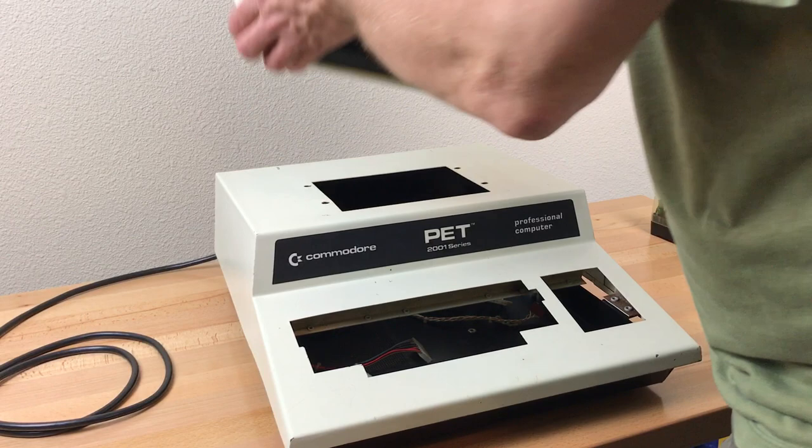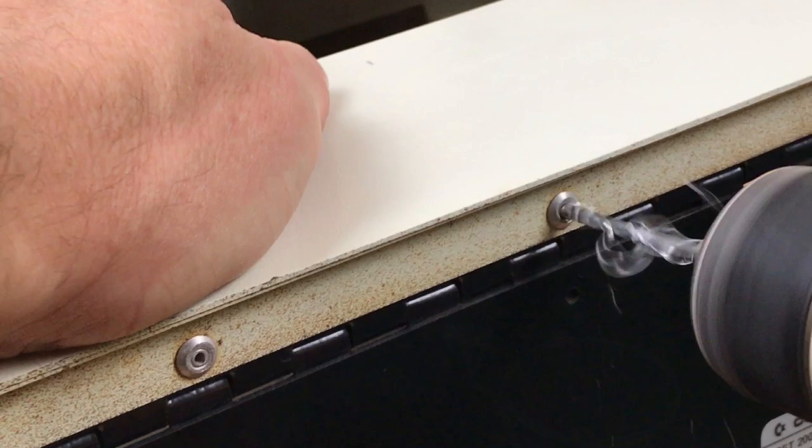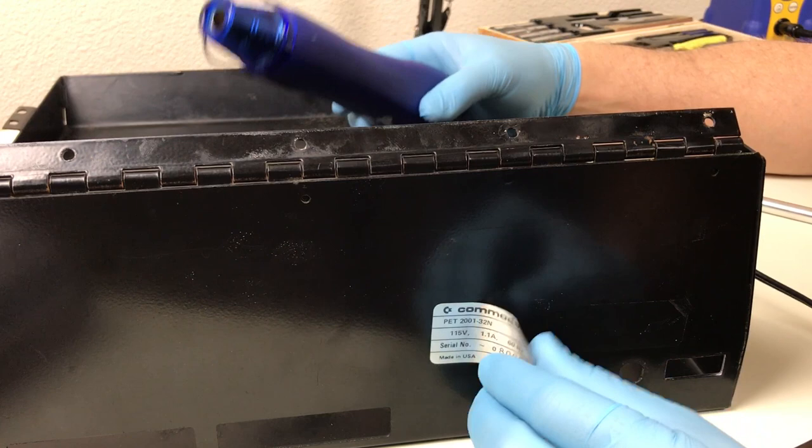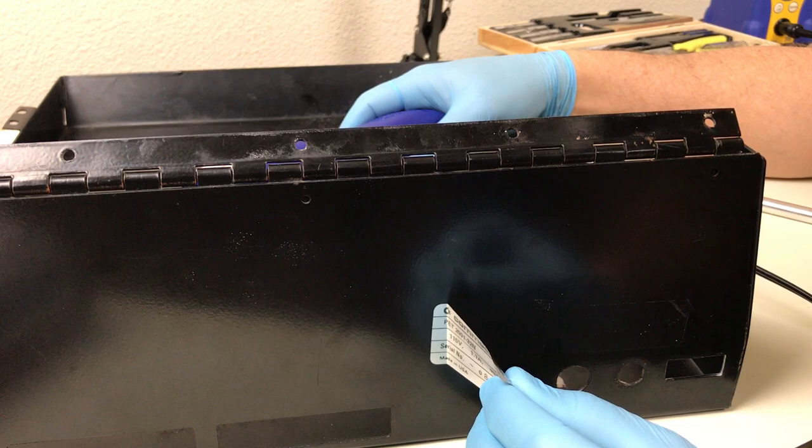I decided I would go ahead and get the case repainted. So I stripped it down to its nuts and bolts, and I drilled out the rivets and the hinge to separate the top and bottom. Removed the screen bezel and the rubber feet. I did my best to carefully remove the labels. I used a heat gun on the metal behind the labels, and I tried to minimize the angle when I was peeling to avoid curling.